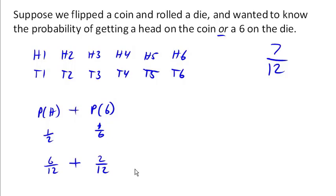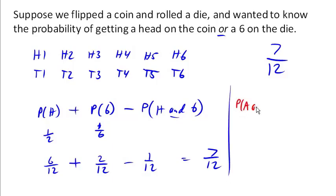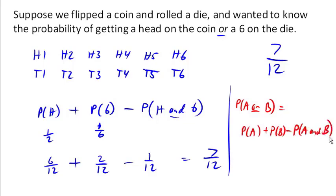In order to compensate for that, we have to subtract out the value we double counted. We subtract out the probability of a heads AND a 6, which is 1 out of 12. So 6 plus 2 minus 1 is 7/12 — the same answer. Our basic rule is: the probability of A or B is the probability of A plus the probability of B minus the probability of both. We subtract out that AND so we're not double counting it.